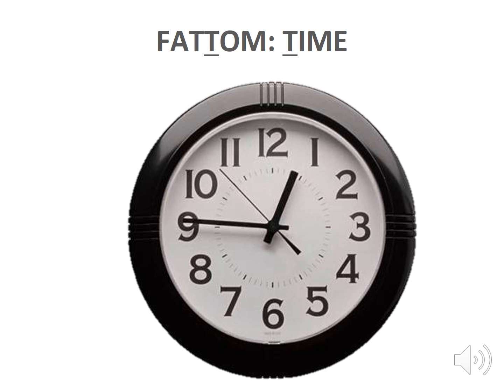The second T is for time. Bacteria needs time to grow. It takes 2 to 4 hours for microbes when held in the temperature danger zone. After it's adapted to the environment, microorganisms grow, divide, and multiply every 20 minutes in temperatures of 40 to 140 degrees Fahrenheit.